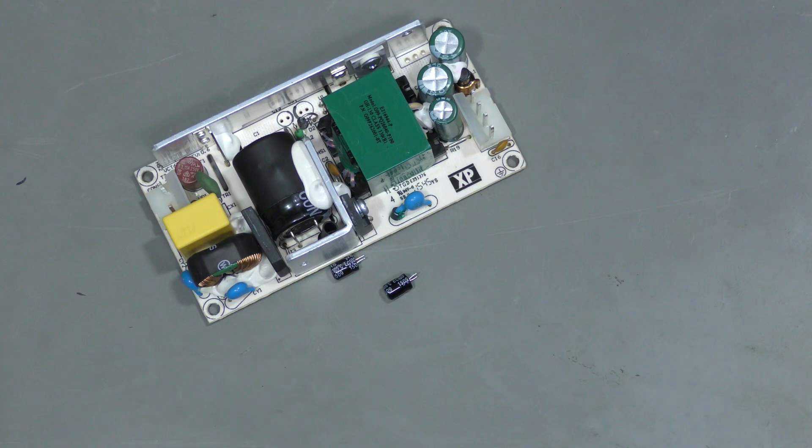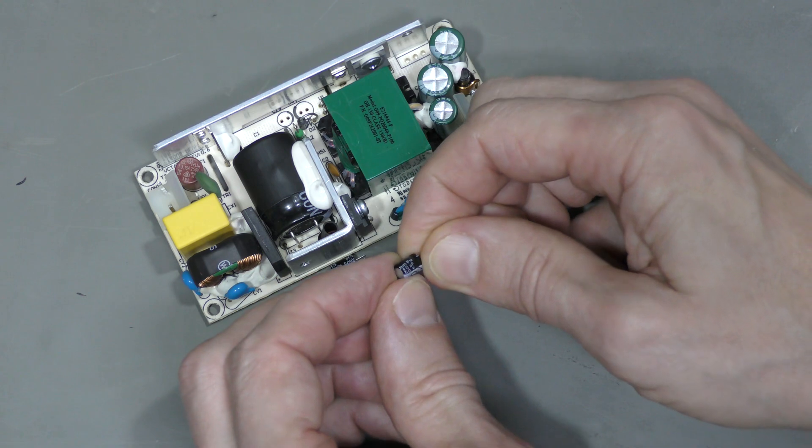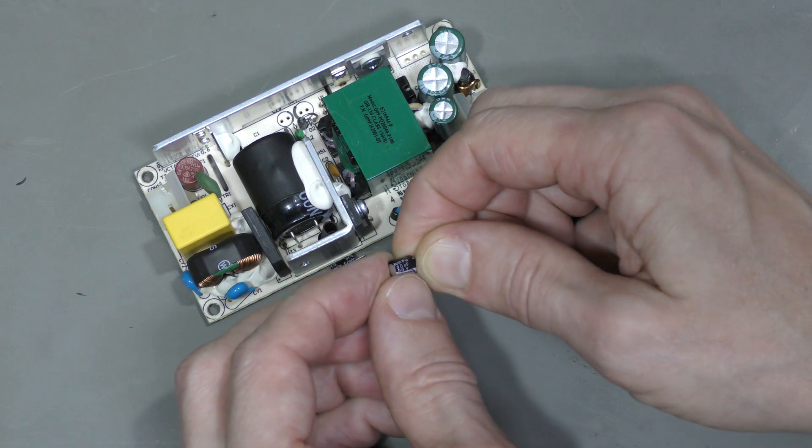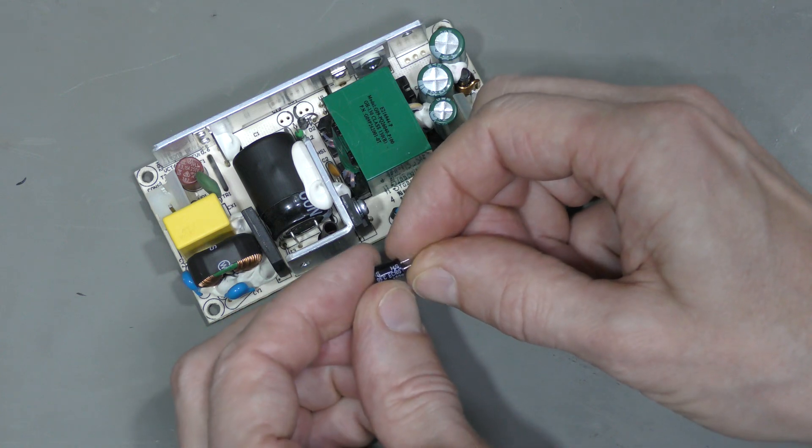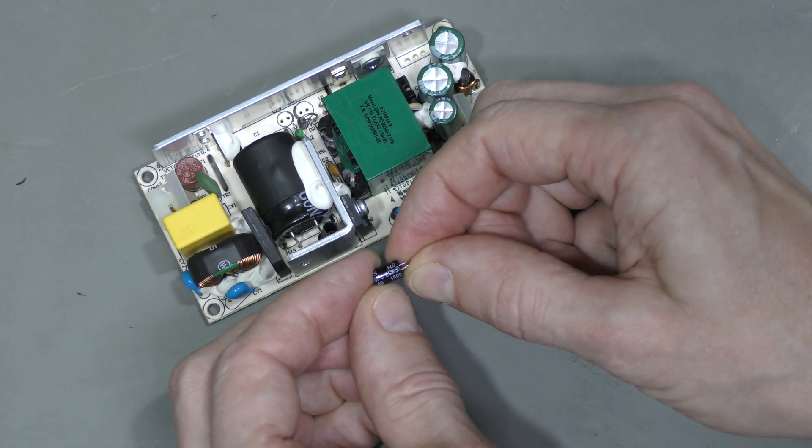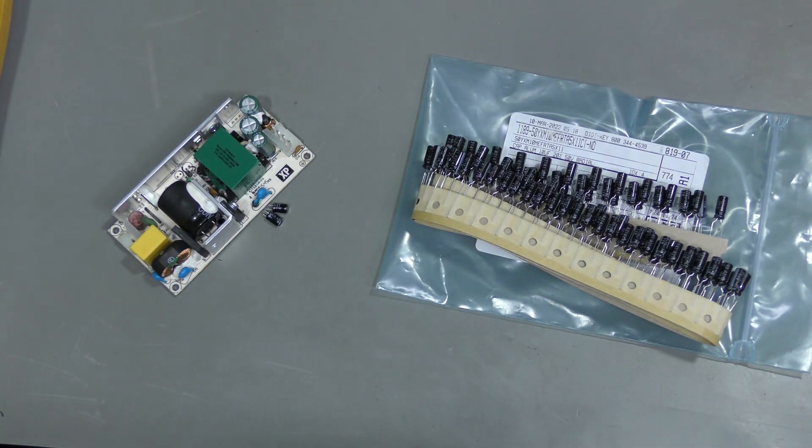Here they are desoldered. Both are 10 microfarads, 50 volts. Junfu brand. 105 degrees C rated. I have plenty of them by Rubicon.